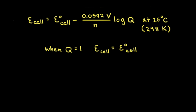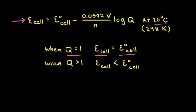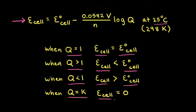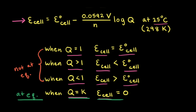Here's a quick summary of what we've learned from the Nernst equation using the simplified form valid at 25 degrees Celsius: When Q equals 1, the instantaneous cell potential equals the standard cell potential. When Q is greater than 1, the instantaneous cell potential is less than the standard cell potential. When Q is less than 1, the instantaneous cell potential is greater than the standard cell potential. When Q equals K, the instantaneous cell potential equals zero volts and the reaction is at equilibrium. For the first three situations, Q does not equal K and the reaction is not at equilibrium.